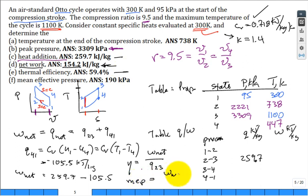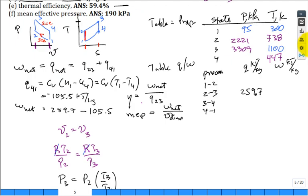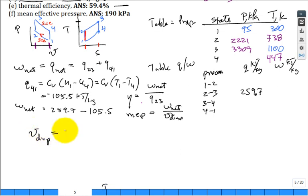Last part: what about the mean effective pressure? Mean effective pressure is the net work divided by the displacement volume. All right, there's a couple ways to get that displacement volume. Let me scroll down. Is the displacement volume the difference between v1 minus v2? Is that true? Yeah.